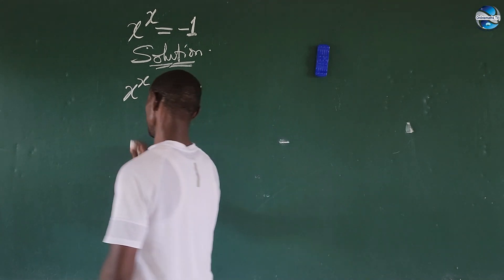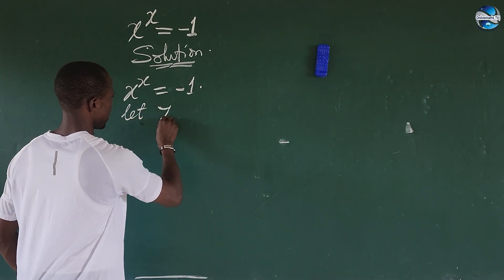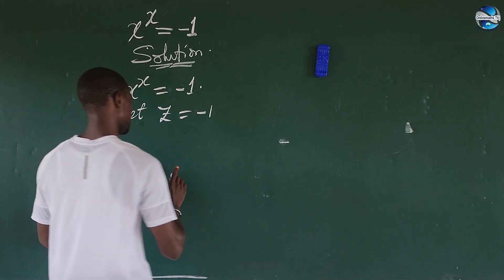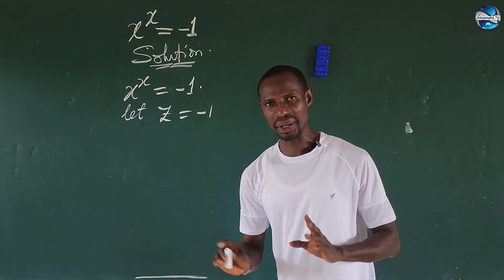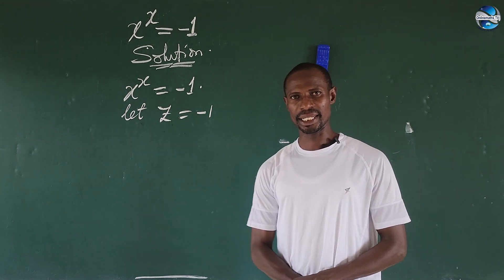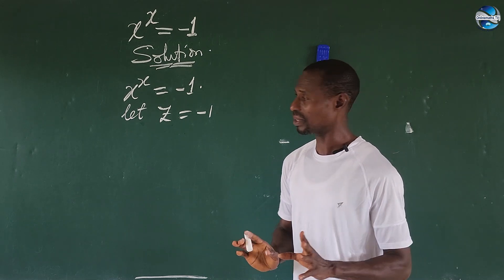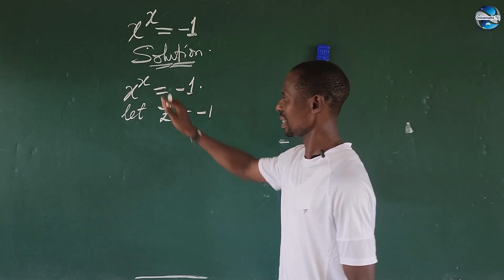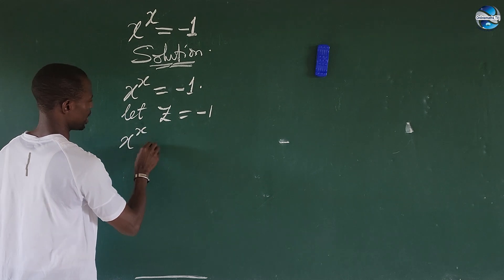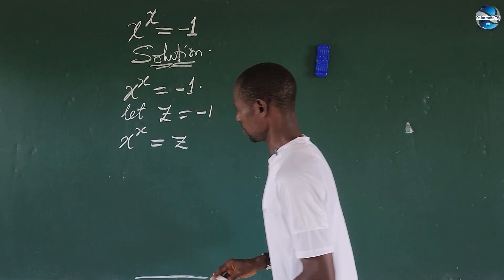We're going to do a simple substitution to teach you here. From here we're going to say let z be equal to minus one, for some set of complex numbers. So if our z here is used to represent minus one for some set of complex numbers — take note of that. We can rewrite the original equation to be x to the power of x equal to z.